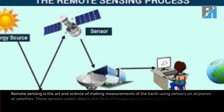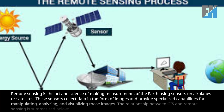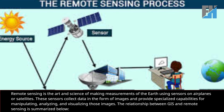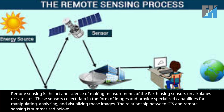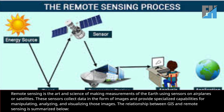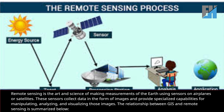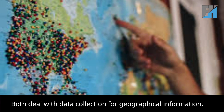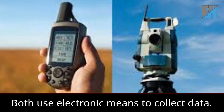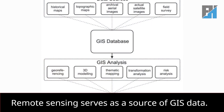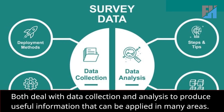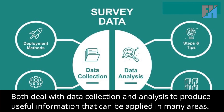Remote sensing is the art and science of making measurements of the earth using sensors on airplanes or satellites. These sensors collect data in the form of images and provide specialized capabilities for manipulating, analyzing, and visualizing those images. The relationship between GIS and remote sensing: both deal with data collection for geographical information, both use electronic means to collect data, remote sensing serves as a source of GIS data, and both deal with data collection and analysis to produce useful information that can be applied in many areas.